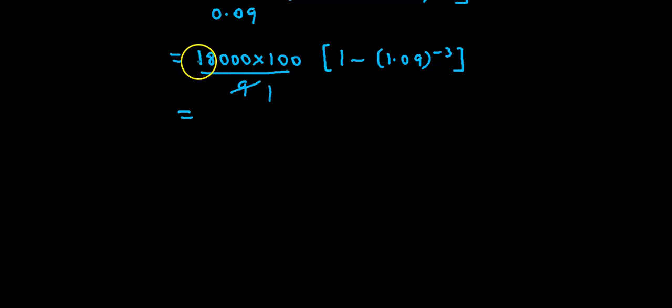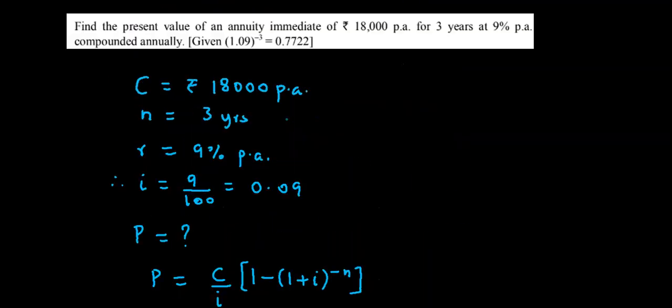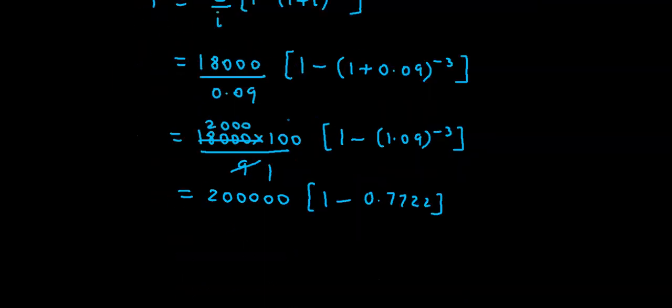Further calculating, this becomes 18,000 into 100 divided by 9, which is basically 2000 with two zeros, into 1 minus. The value is already provided: 0.7722. Let me cross check, 0.7722.